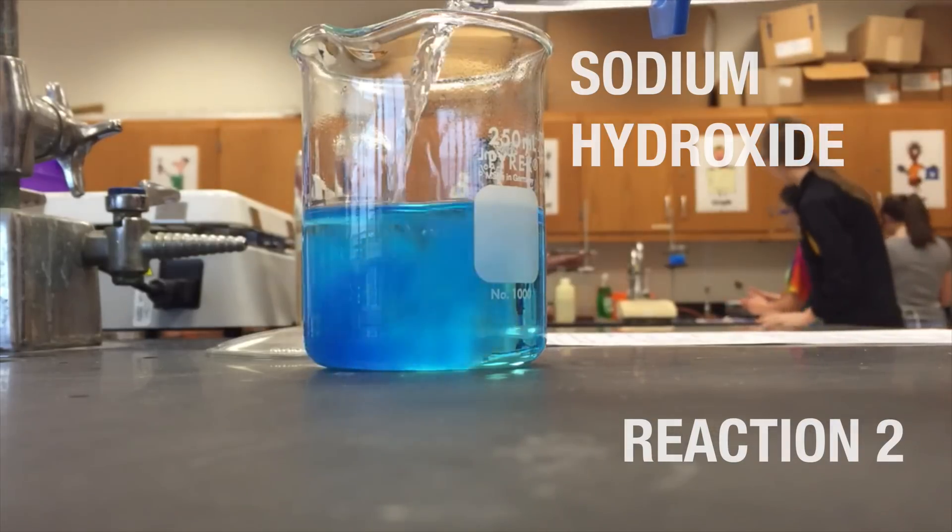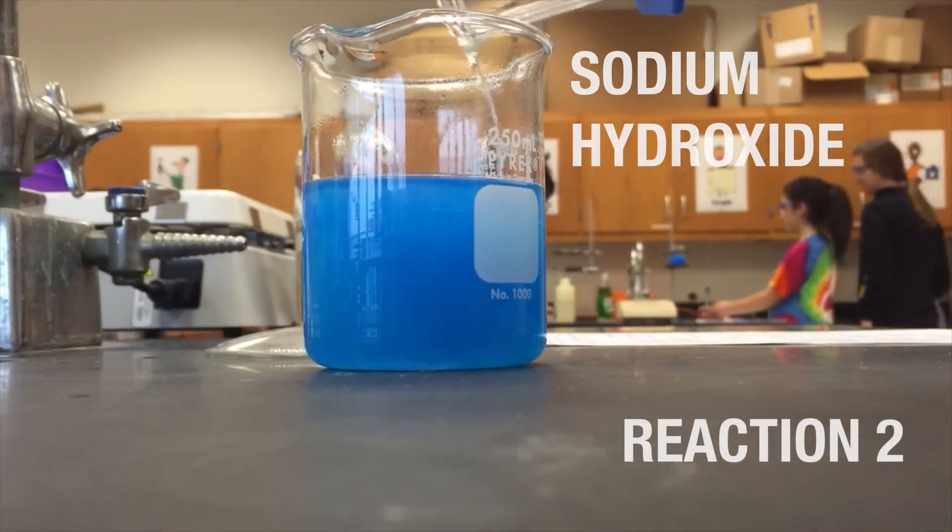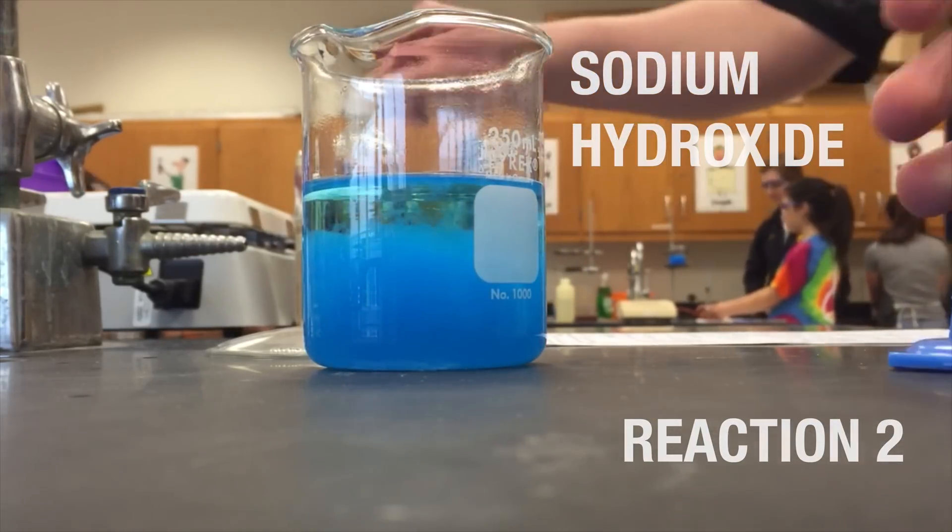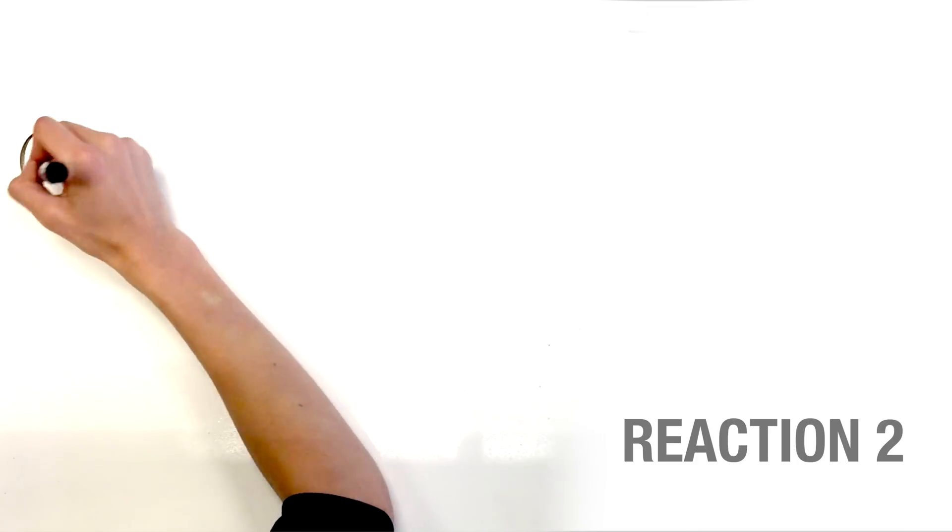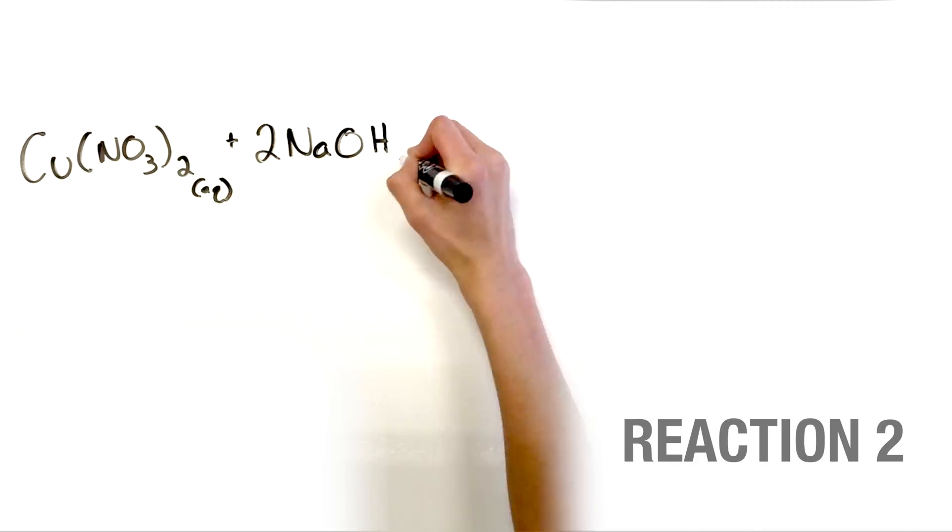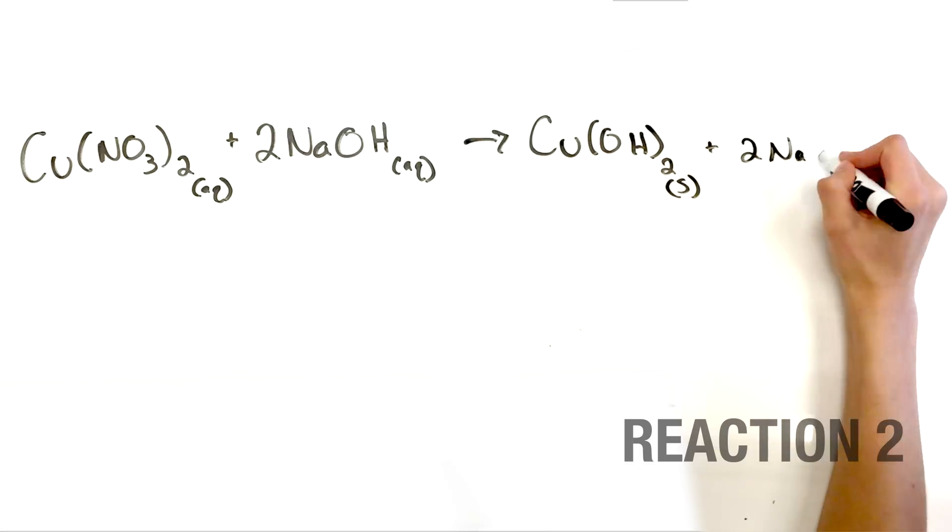In reaction 2, sodium hydroxide was added to the copper nitrate, which turned the blue liquid cloudy and slightly warm. The reactants, copper nitrate and sodium hydroxide, produced copper hydroxide and sodium nitrate.